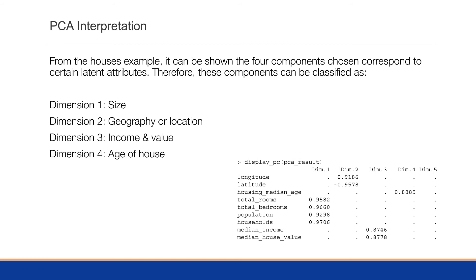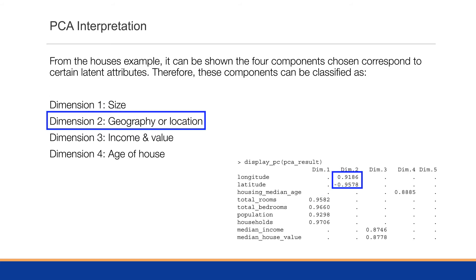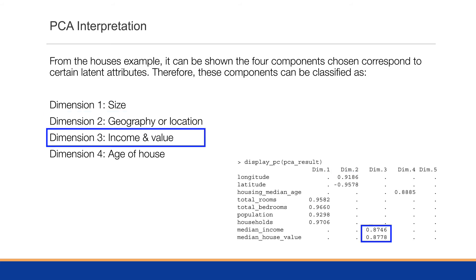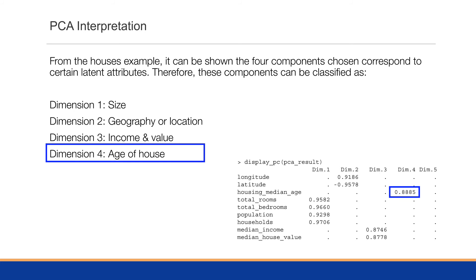From the housing example, four components correspond to the latent attributes — those variables not directly seen. Using the display_pc function available on the blog, which keeps only values above a certain cutoff for easier reading, we see that dimension one refers to size (total rooms, total bedrooms, population, households), dimension two refers to geography or location (latitude, longitude), dimension three relates to income and value, and dimension four is housing median age by itself.